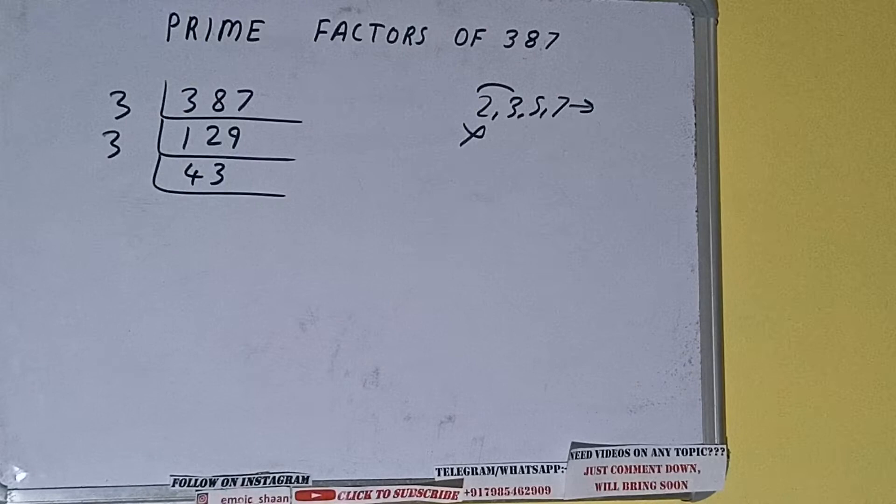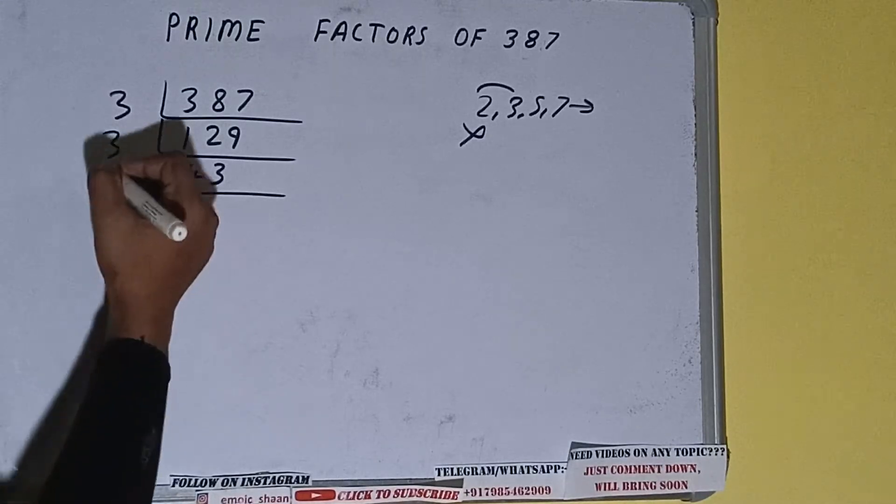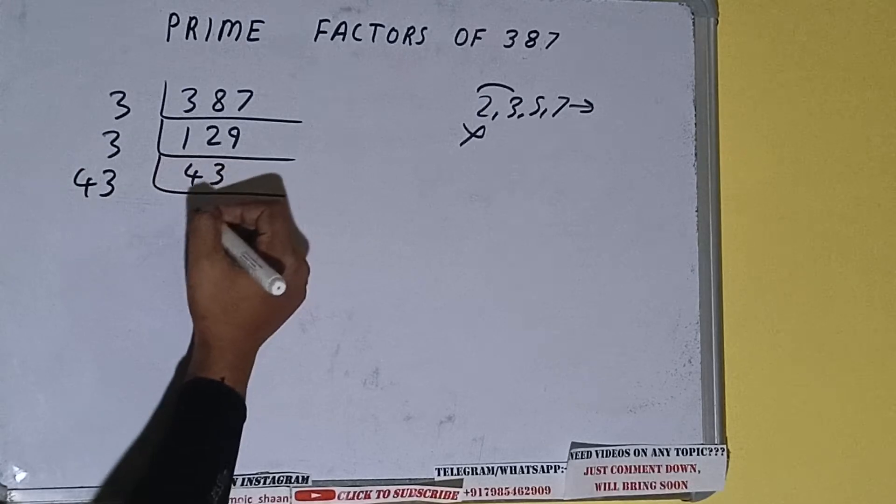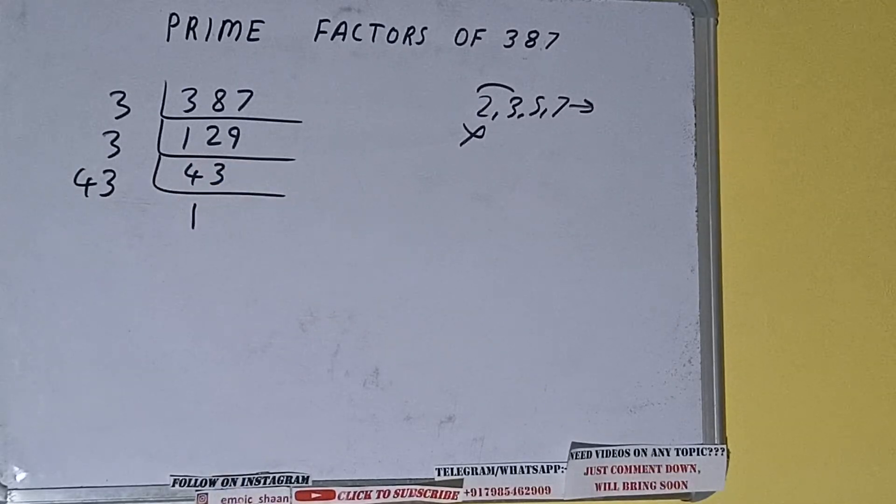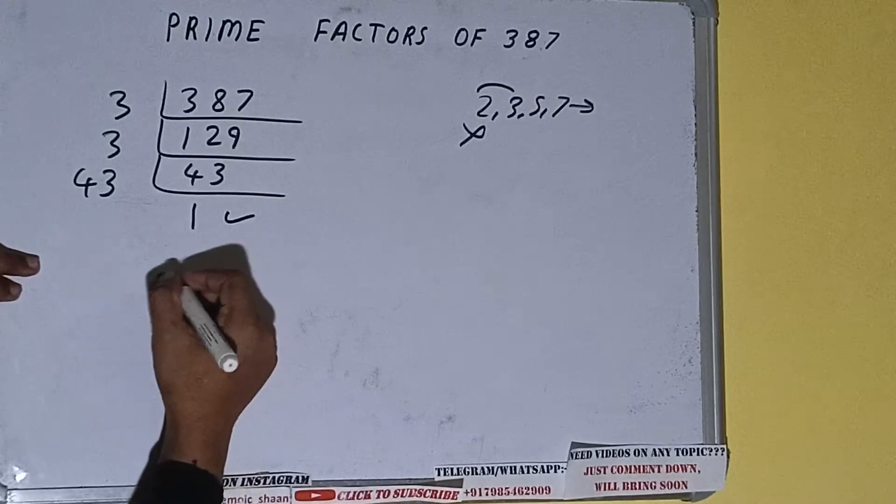Now, is this 43 further divisible by 3? The answer is no, and 43 is also a prime number, so it is only divisible by itself, that is 43. Once we do so, we'll be getting 1. Once we get 1, we need to stop and do one last thing: the prime factors of 387 will be whatever we have on the left-hand side.